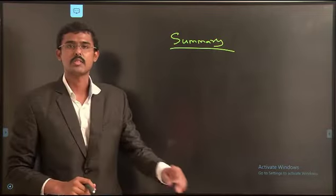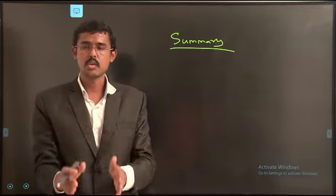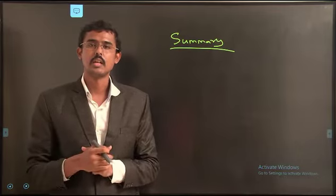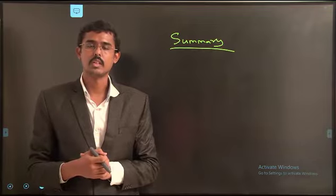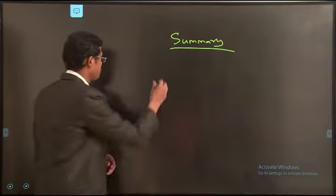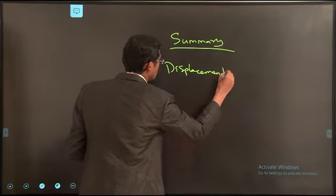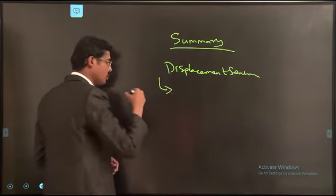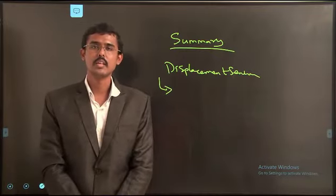In summary, in this session we have defined the various types of sensors including displacement sensors, proximity sensors, light sensors, velocity sensors, force sensors, and water level and flow sensors. First we covered the potentiometer as a displacement sensor, then the hall effect sensor. The remaining types of sensors will be covered in the next session. Thank you.